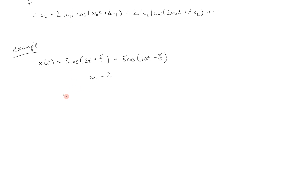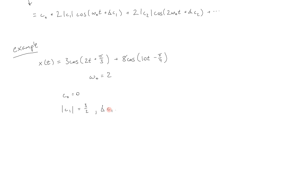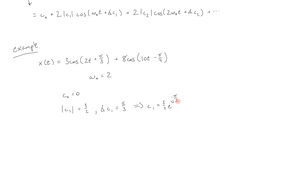We can see immediately that c sub 0 is equal to 0 because there is no constant term. c sub 1 is going to have a value because we have a term with omega naught t — in other words, 2t since omega naught is 2. So this term must match this form. This means that the amplitude of c sub 1 must be equal to 3 halves, because 2 times the amplitude of c1 equals 3. And the phase of c sub 1 is equal to pi thirds — just matching terms. This means that c sub 1 itself is equal to 3 halves e to the j pi thirds, since it's that complex quantity equal to its amplitude times e to the j phase.